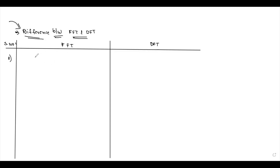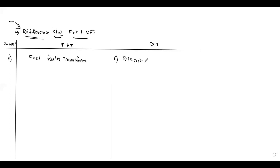Serial number one: the first point. The full form of FFT is Fast Fourier Transform. The full form of DFT is Discrete Fourier Transform.